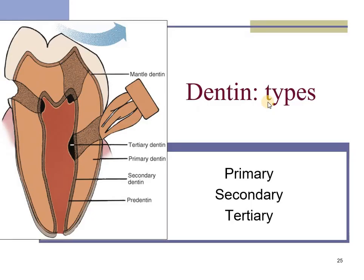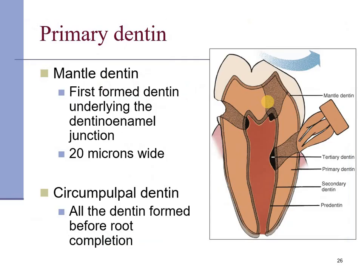There are three types of dentine: primary, secondary, and tertiary. Primary dentine is divided into mantle dentine, also called first-formed dentine, which forms the outermost zone of the dentine. Just below the enamel or below the cementum, you see a linearly mineralized dentine called mantle dentine, which constitutes around 20 microns in width.